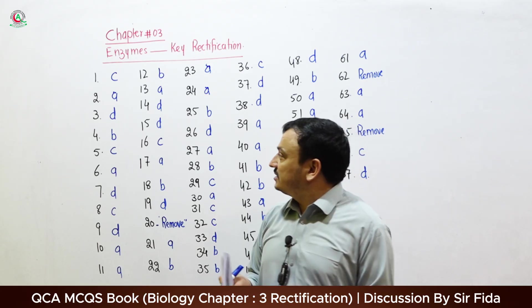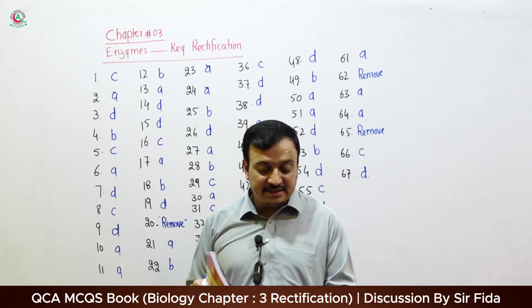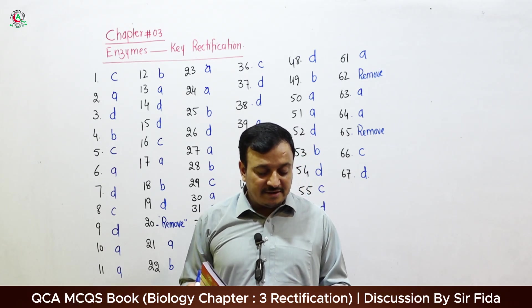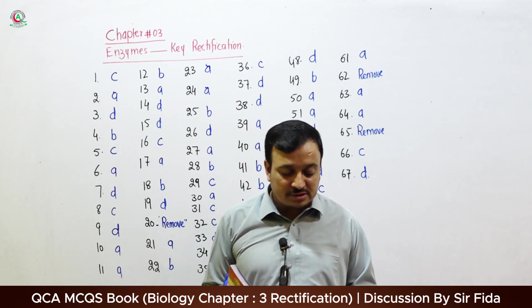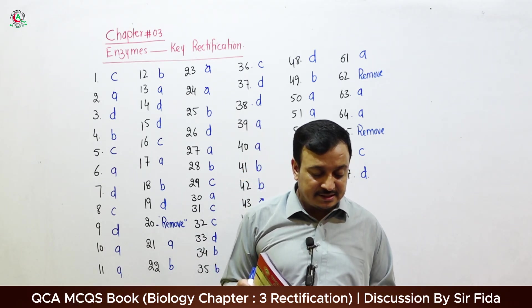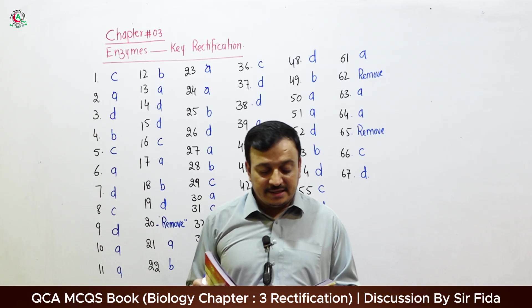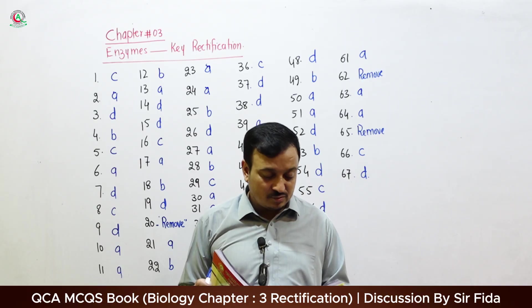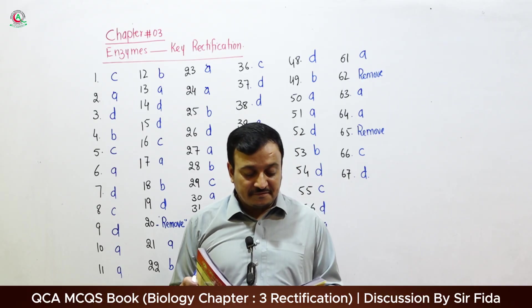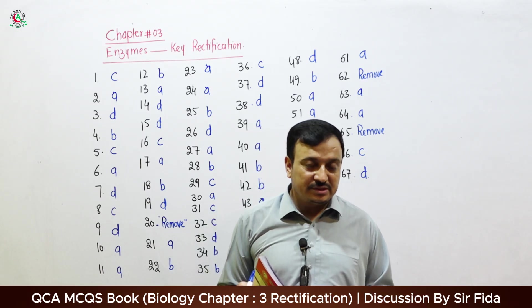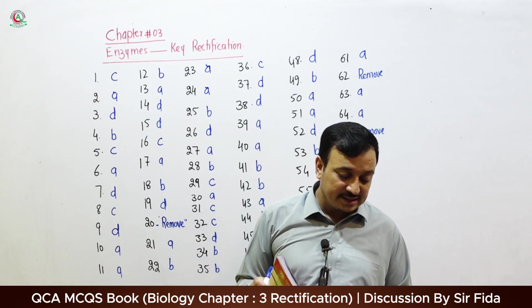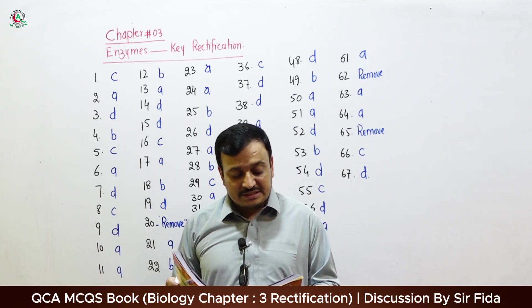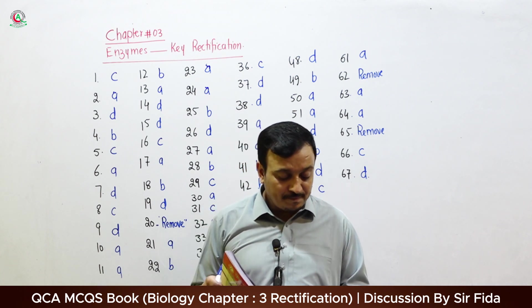The correct answer for Q1 is C, that is pH 7 to 8. Question 2: If you add more substrate to an already occurring enzymatic reaction and it has not affected the rate of reaction, what is the term given for this situation? The correct answer is B: substrate saturation.